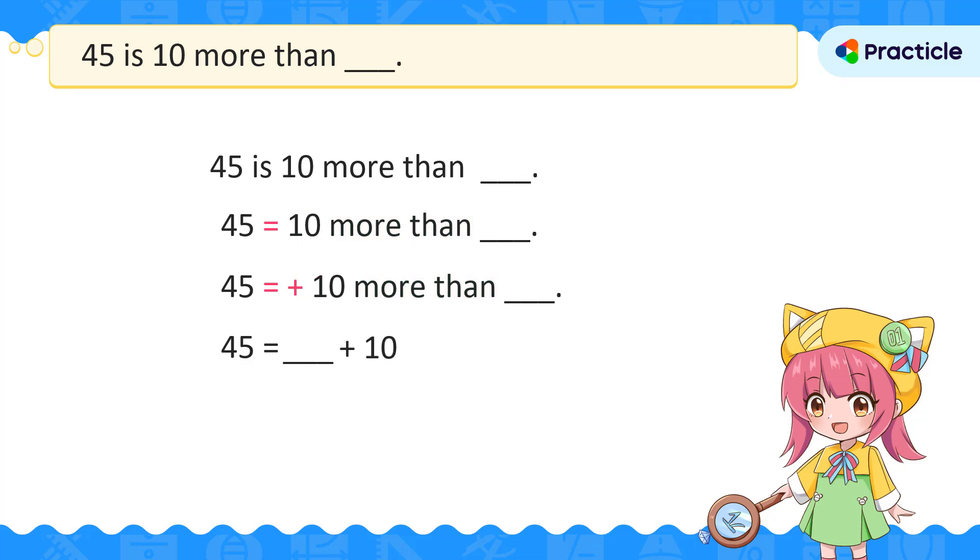If this looks strange to you, you can always flip the numbers around to make it look like what you're familiar with. This is what we get when we switch what's on the left with what's on the right. What is the missing number? Let's subtract 10 from 45 to find out. 45 minus 10 is 35. This also means that 45 is 10 more than 35.